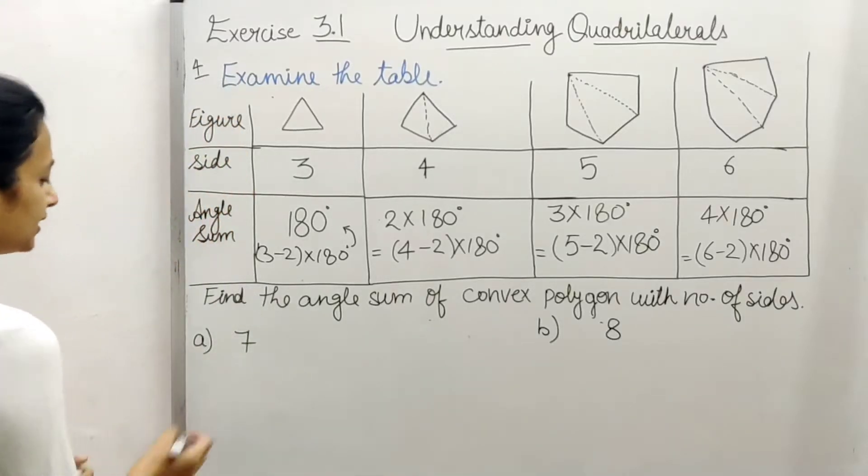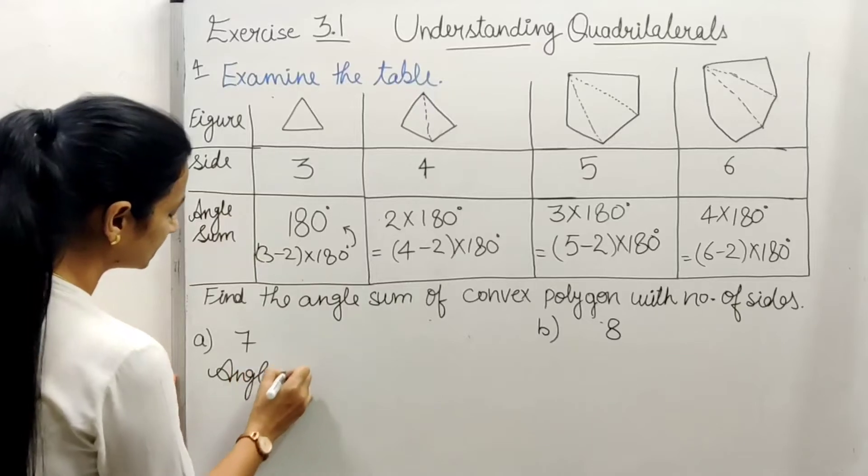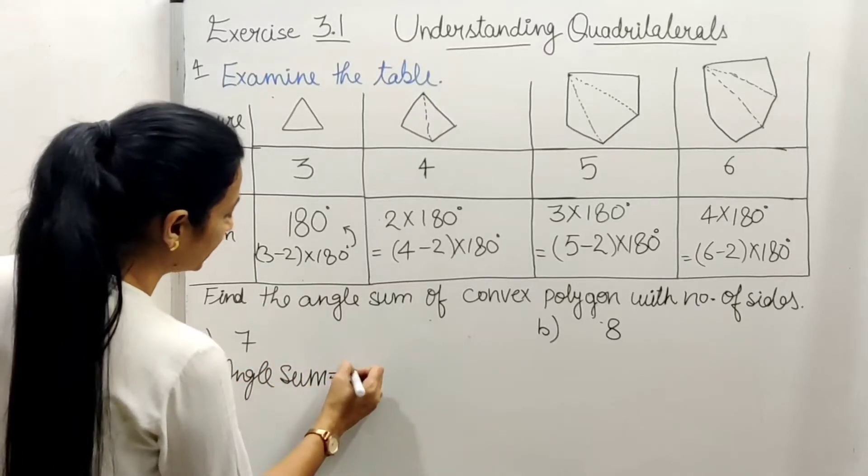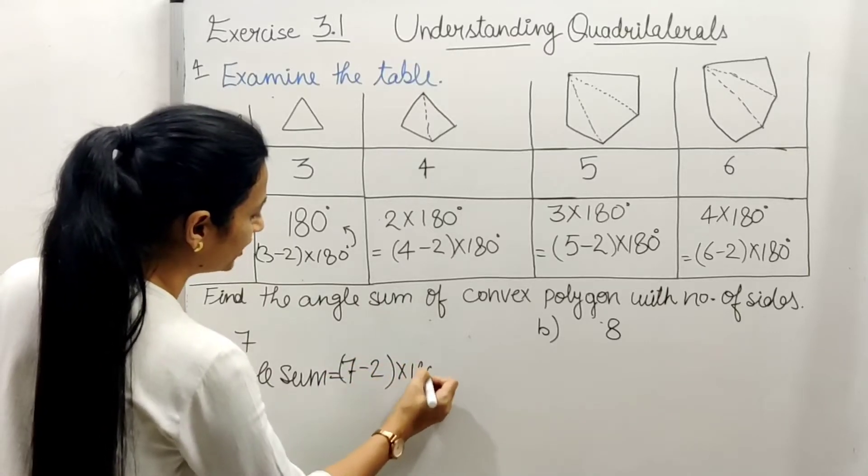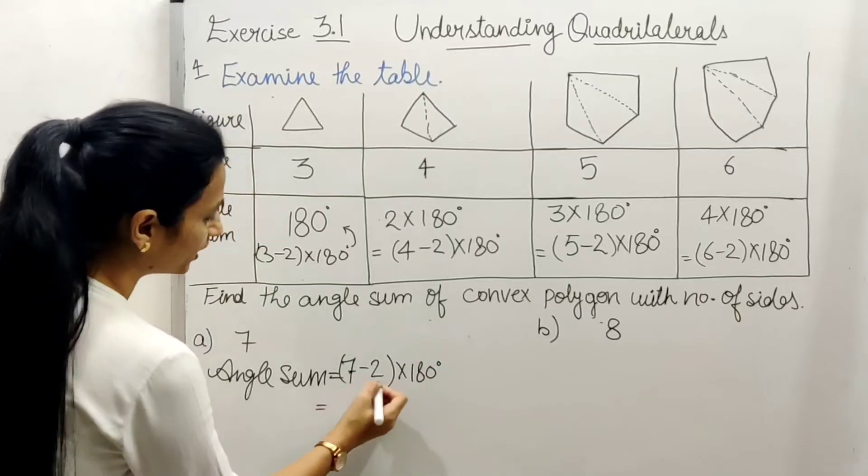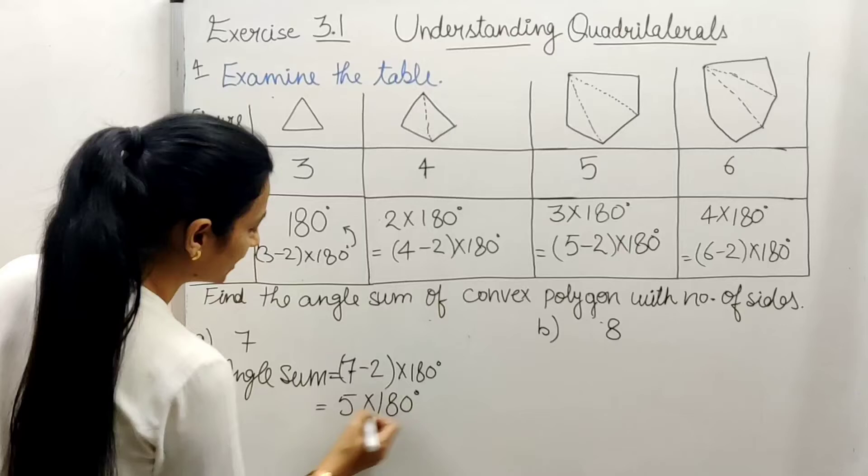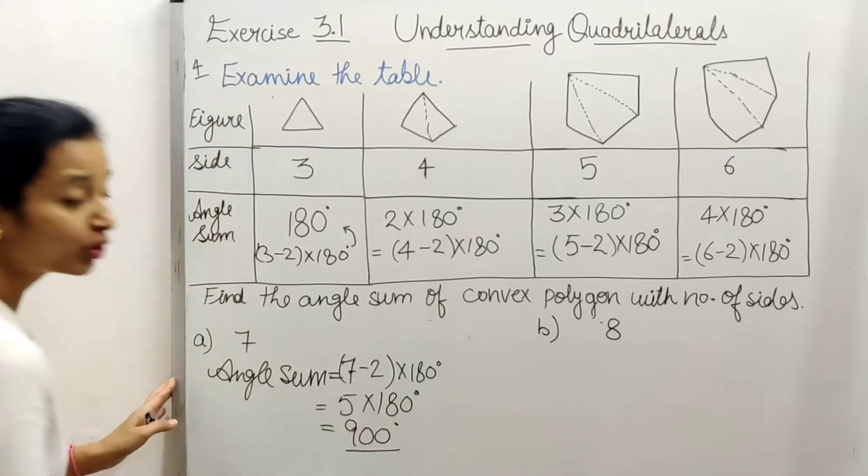And angles sum we have to find in this table. So let's do this, what will it be? Angle sum equals to, side is how many? 7 minus 2 into 180, right? So what will it be? 5 into 180 and 900 degree.